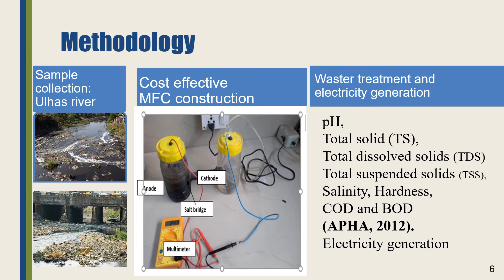The cost-effective microbial fuel cell construction was carried out in the laboratory by using two plastic jars as anode and cathode chambers. These two chambers are separated by a salt bridge. The anode chamber basically represents an anaerobic chamber, whereas in the cathode chamber, aerobic conditions are maintained. For detection or measurement of the electricity, a multimeter is used.